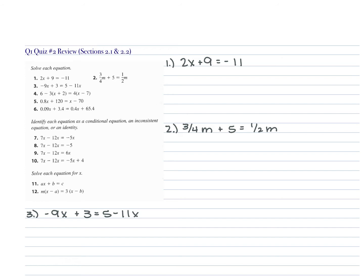You'll have some like you see here on your review. For example, number 11: if you have AX plus B is equal to C, where A is equal to 2, B is equal to negative 6, and C is equal to 7, solve for X. Starting off with problems 1 through 6, we are just solving these equations for X. For number 1, we have 2X plus 9 is equal to negative 11.